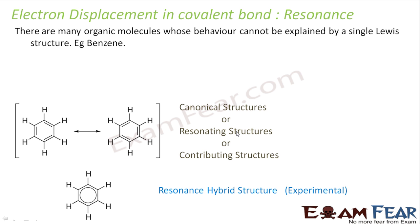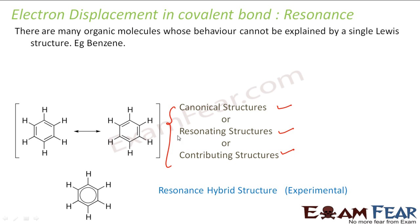There are many organic molecules whose behavior cannot be explained by a single Lewis structure. For example, benzene can be drawn as two Lewis structures. These structures are called canonical structures, resonating structures, or contributing structures — all these names mean the same thing. They are different Lewis structures you can draw, but they are not the actual structure, because the behavior of benzene cannot be explained by any one of these structures alone.